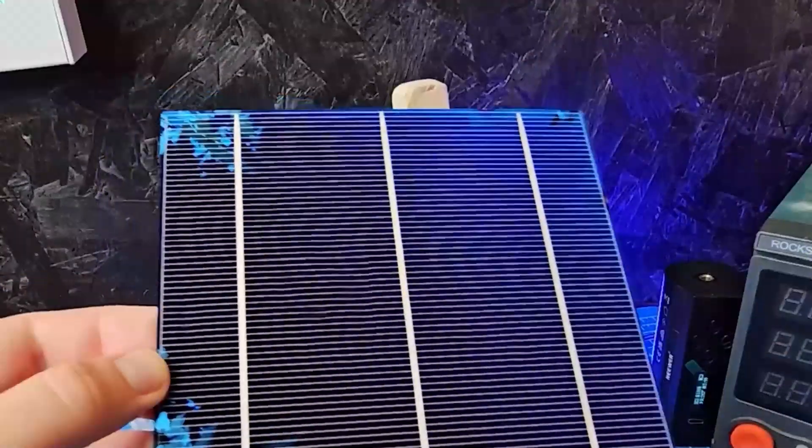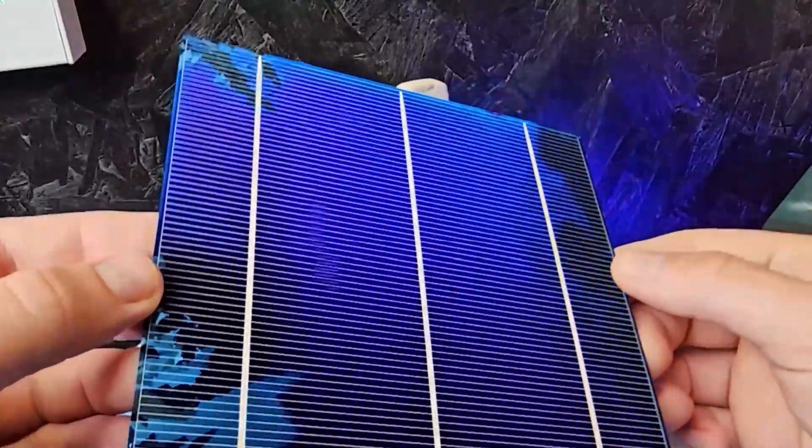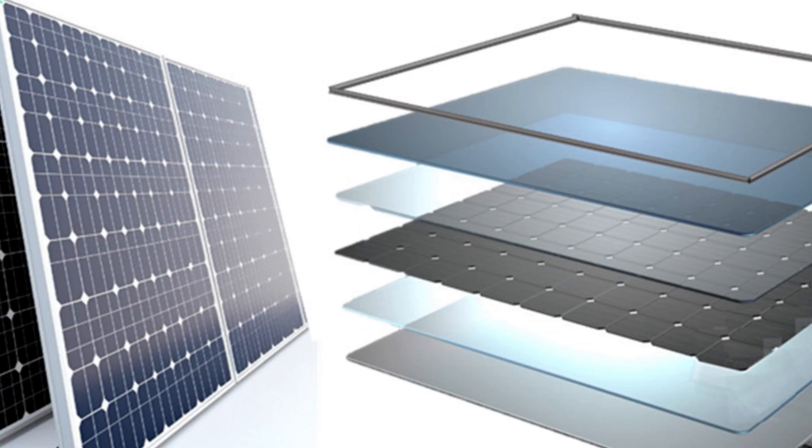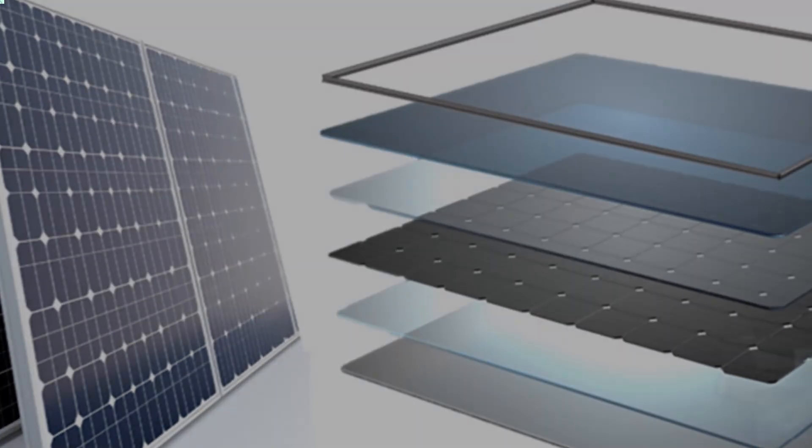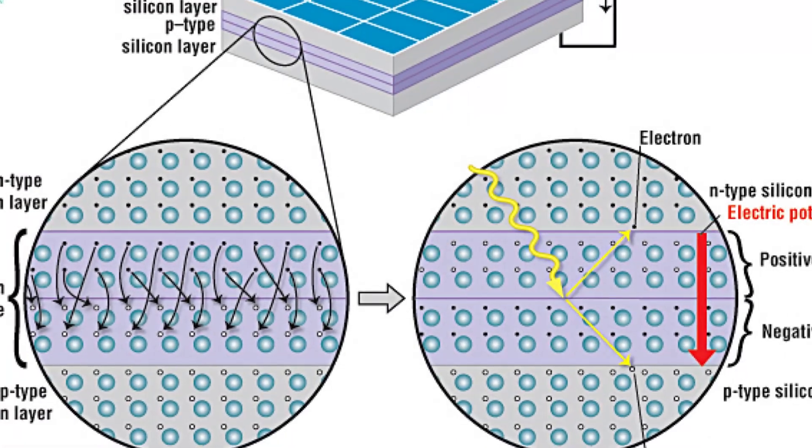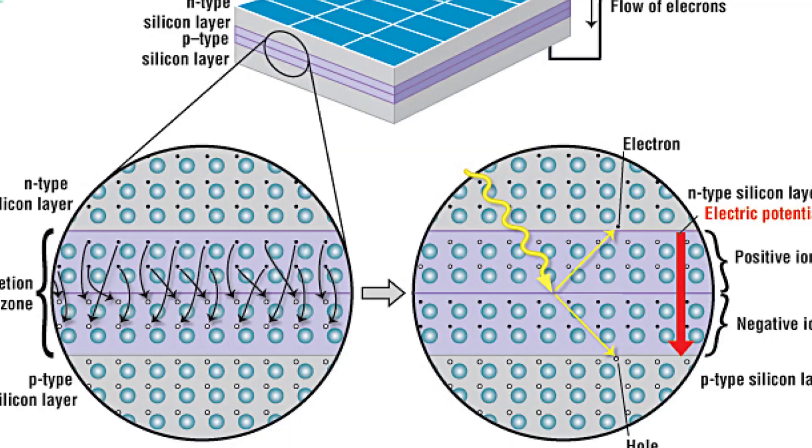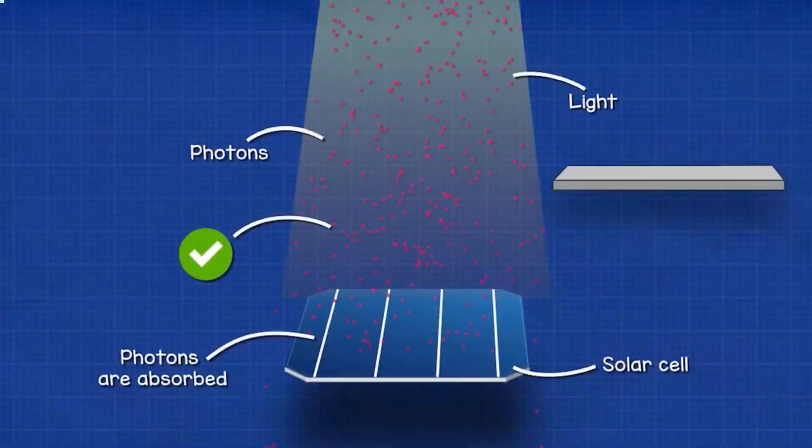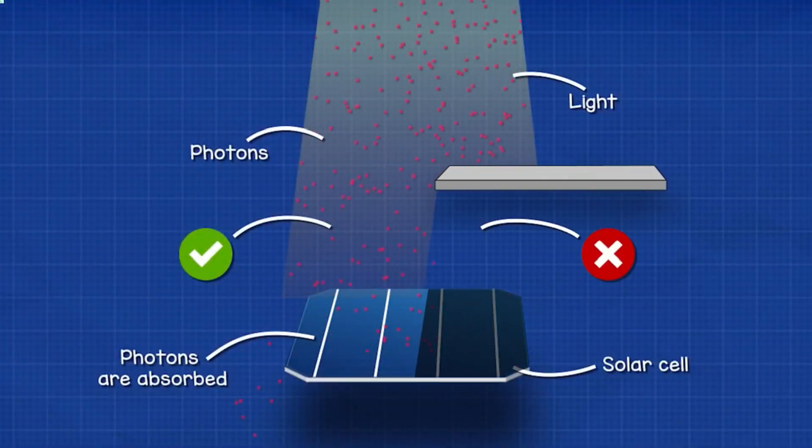Now, before we go any deeper, let's explain how traditional solar cells work so we can compare. In a regular silicon solar panel, you have two semiconductor layers. Where they meet, an electric field is created, known as a depletion zone. When sunlight, specifically photons, hits that zone, it knocks electrons loose from their atoms.